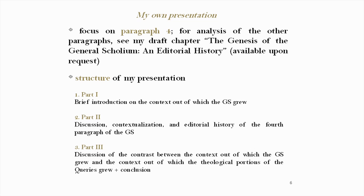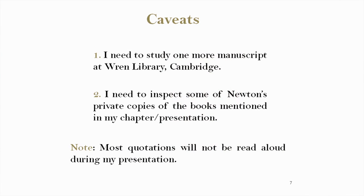The structure of my presentation is as follows. In the first part, I will provide a brief introduction on the context out of which the General Scholium grew. In the second part, I will discuss the fourth paragraph. In the third part, I would like to draw your attention to the differences between the context out of which the General Scholium grew and the context out of which the theological portions of the queries drew. I would also like to make two caveats: I need to study one more manuscript at Wren Library, and I need to inspect some of Newton's private copies of the books mentioned in my chapter and presentation. Most quotations will not be read aloud for reasons of time constraint; however, all quotations are on the handouts.